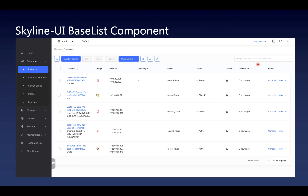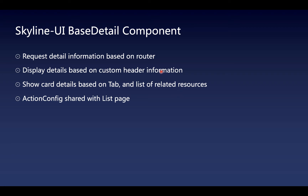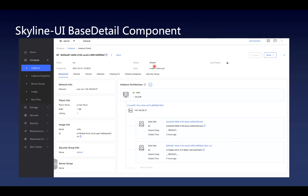The data can be searched based on filter items. Back-end pagination is supported and it is achieved by limit, marker, and total count API. When users interact with this page, the page will automatically refresh. Next is the base detail component. I will use the page to explain it. This is a resource detail page. It will request information based on route. The page displays details based on a custom header, and more information is classified by tabs and displayed in the form of cards or lists. Also, the details page shares the same action configs with the list page.